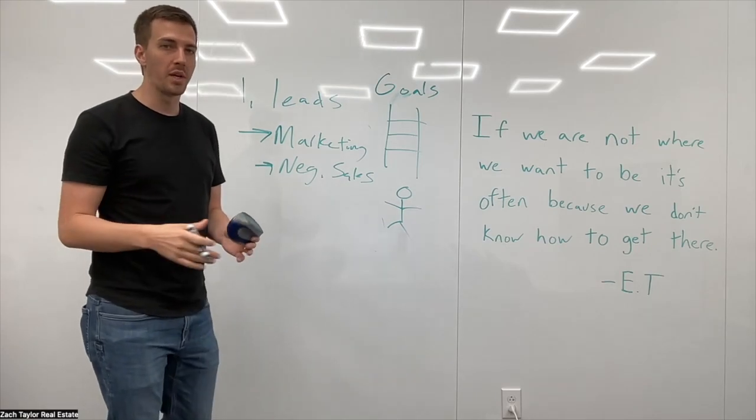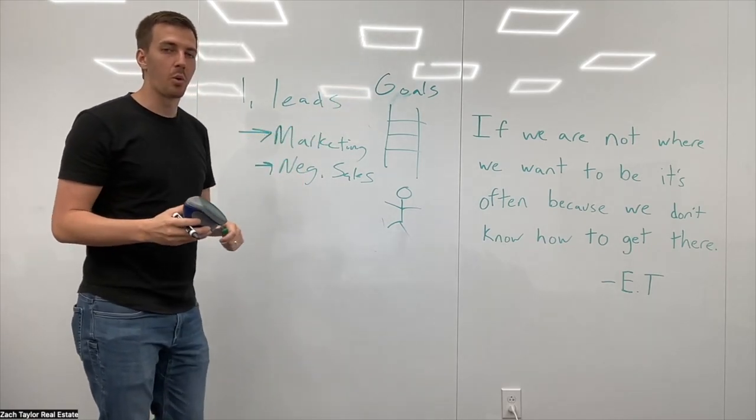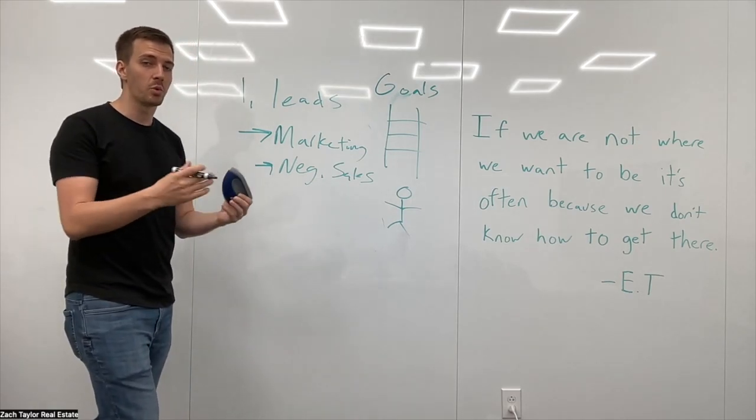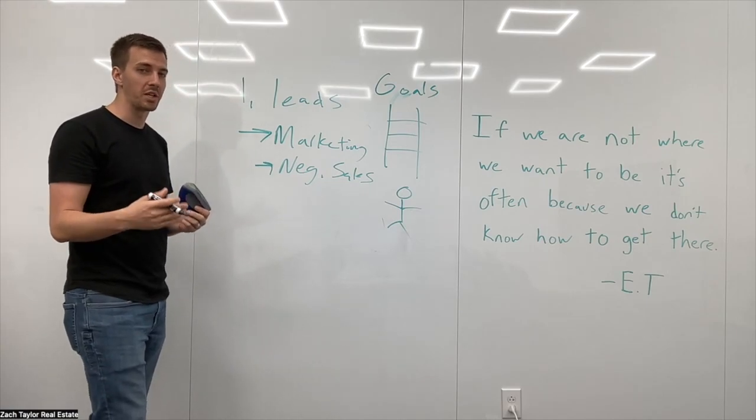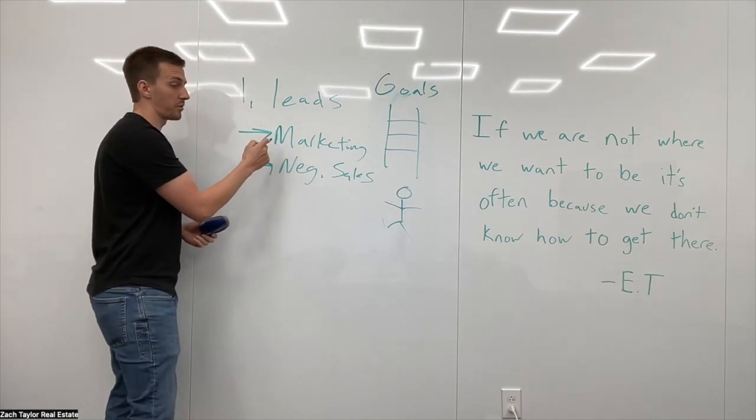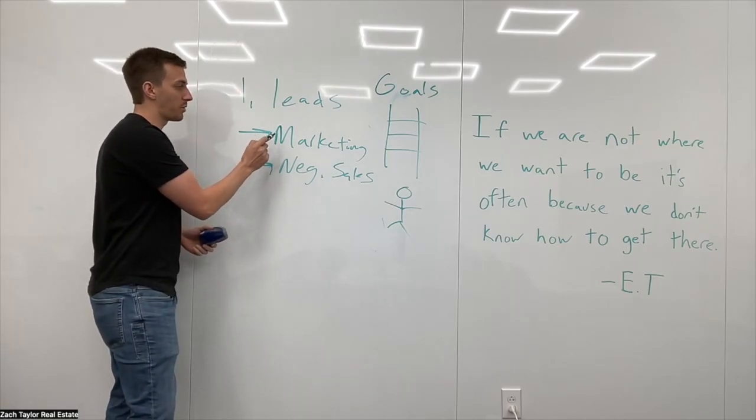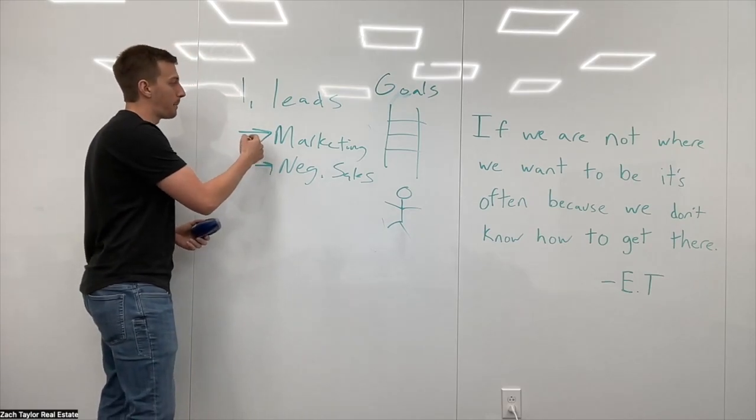Well, what I like to always show with hitting goals and reaching a level of success is I oftentimes want to find somebody that is doing what I want to do. And if I start doing what they're doing, oftentimes I have a great chance of getting to where they're at. So start watching people that have the level of success you want. What are they doing with marketing? Study the competition, know what they're doing.